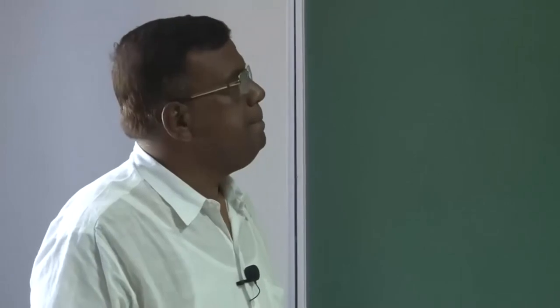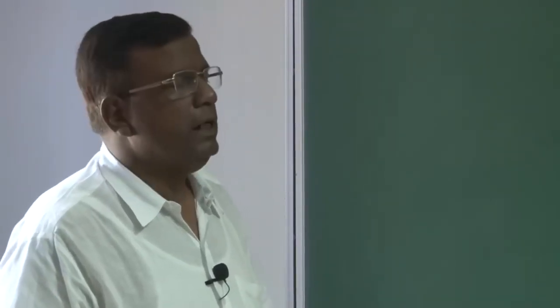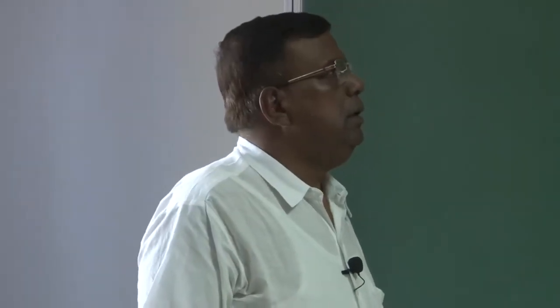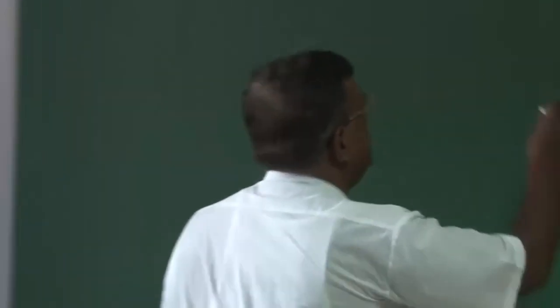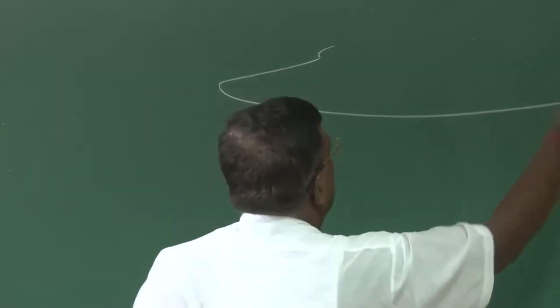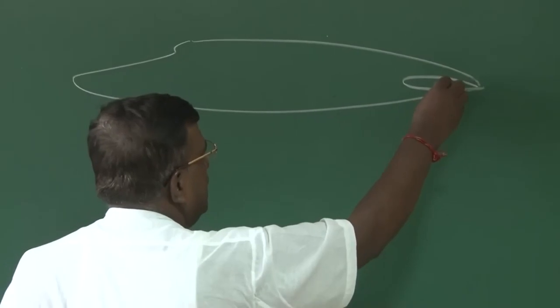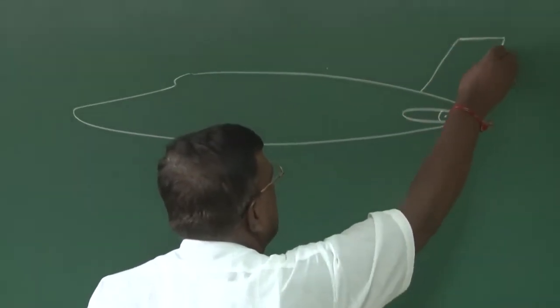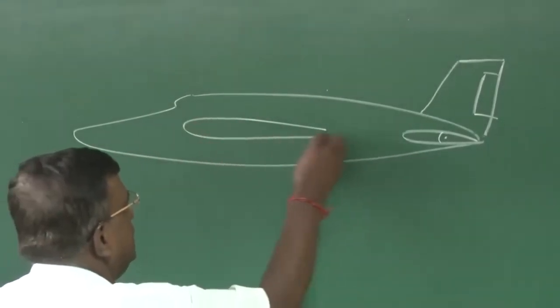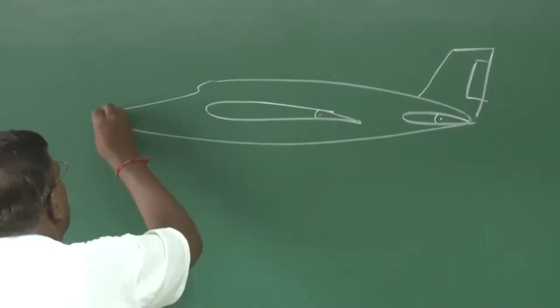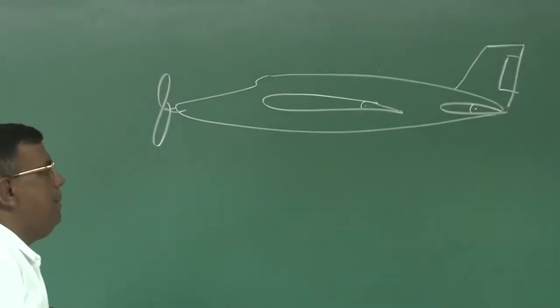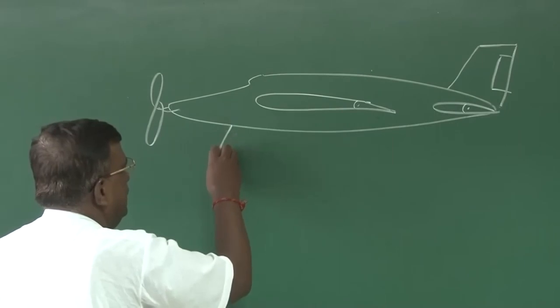Good morning. So we were discussing about aircraft design and we have seen in the last lecture two components of an aircraft. If I draw an aircraft, this is the horizontal tail and this is the elevator, there is a vertical tail, there is a rudder, and importantly there is a wing and there will be a flap, there could be an engine and of course you will have landing gear.